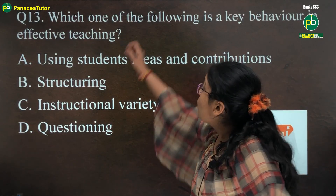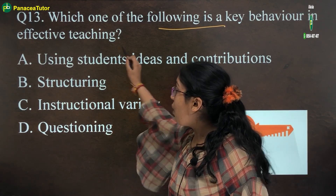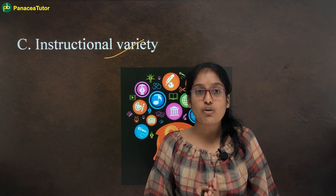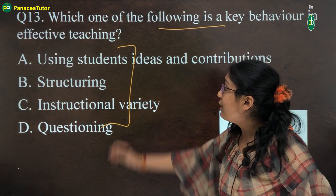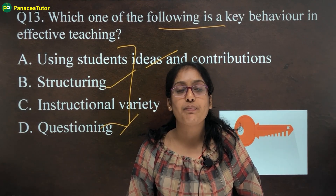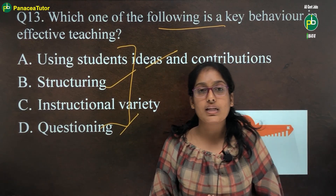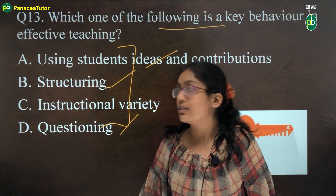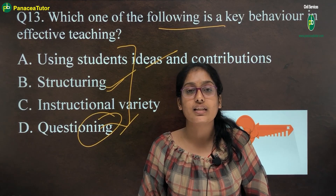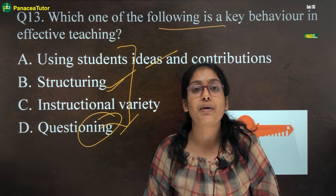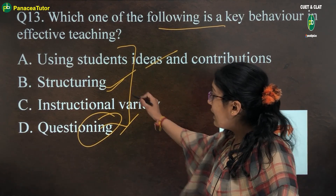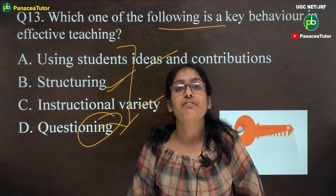The next question is: which one of the following is a key behavior in effective teaching? The answer is option C: instructional variety. Instructional variety is the main key behavior in effective teaching. The other options — using student ideas, structuring, and questioning — are among the five helping behaviors of effective teaching, not key behaviors. The five helping behaviors are: using student ideas, structuring, questioning, probing (giving hints/clues when a student can't answer), and teacher effect (the outcomes of what was taught). Instructional variety is the key behavior.